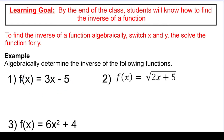So remember that f of x is a way of saying output values — another way of saying f of x is to say y. So in any of these problems, if you see the function notation, you can also replace it with y. It's a little bit easier to talk about x and y instead of x and f of x. So we'll make that change. What we set up top was switch x and y — so we're going to do that. We're going to come to our problem and say x equals 3y minus 5.